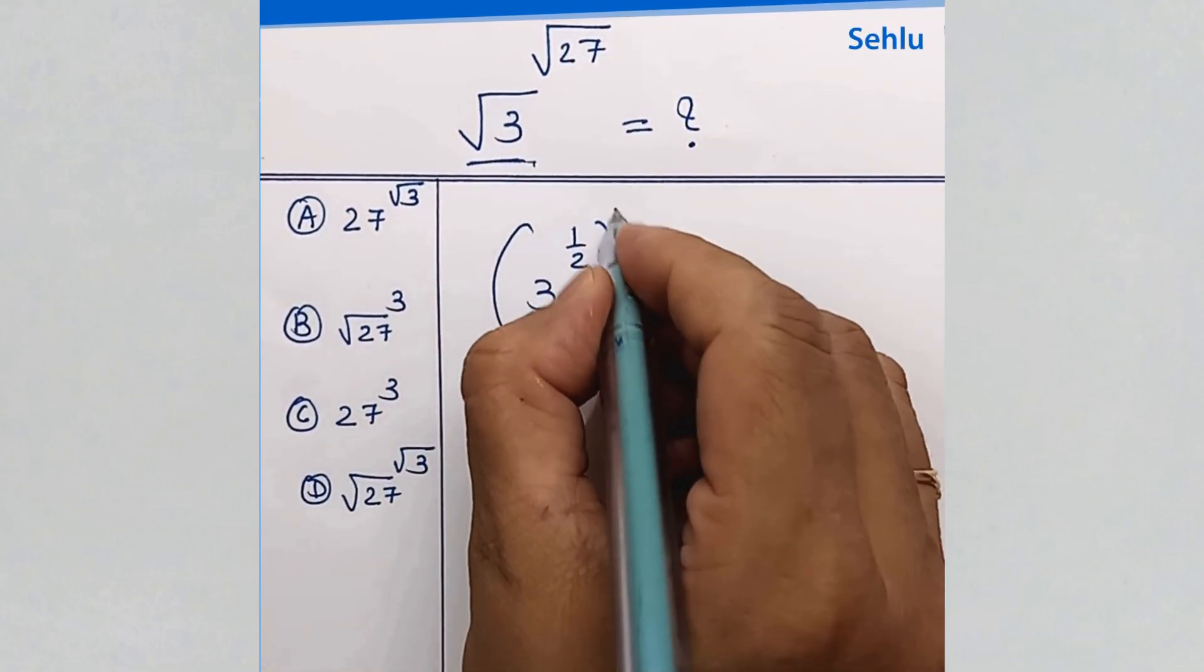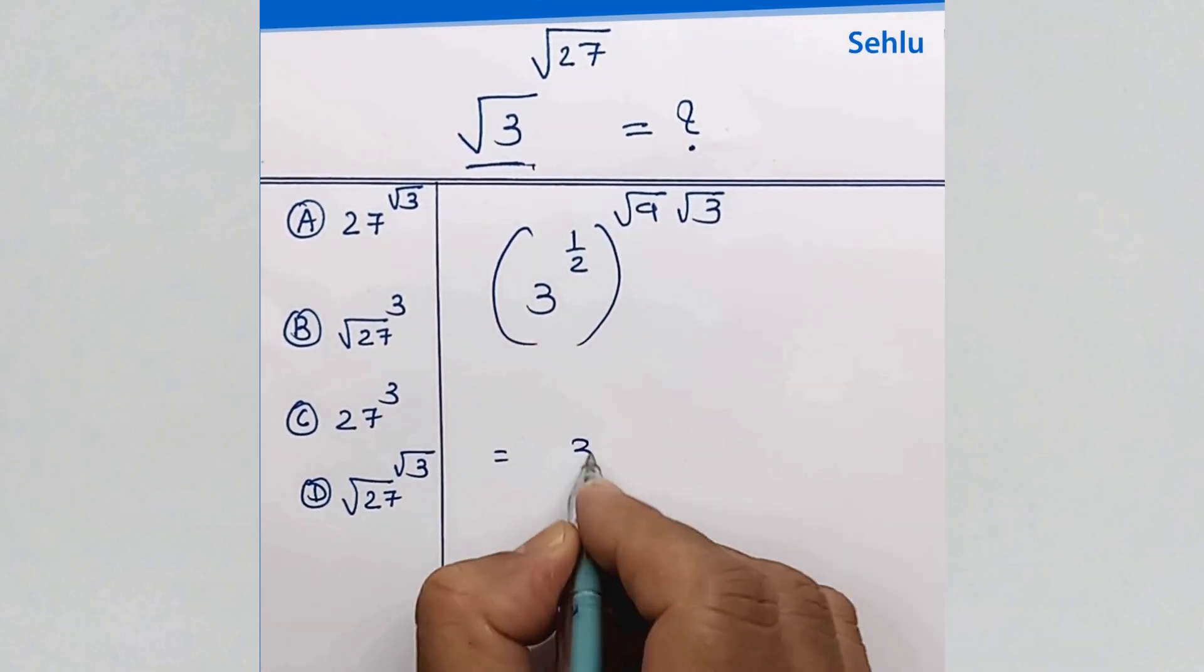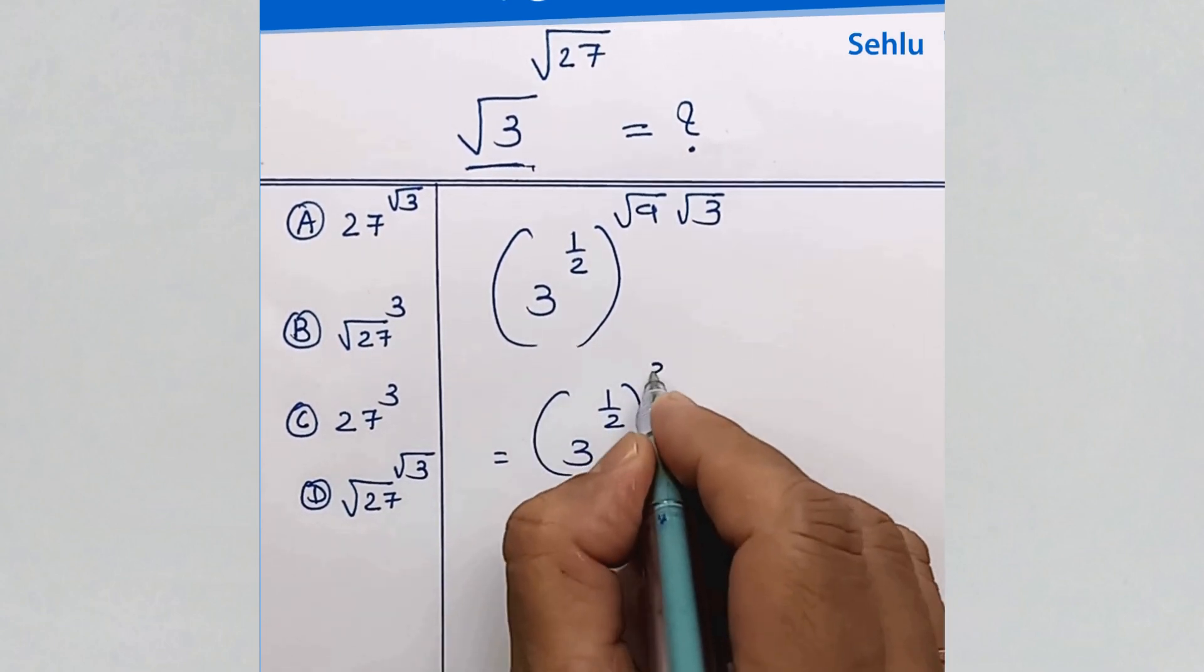Square root 27 is square root 9 times square root 3. Square root 9 is 3.